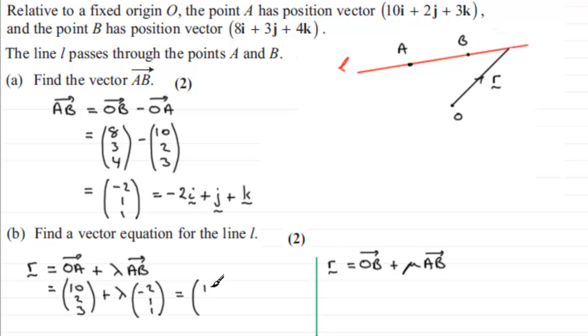or you could even just group the components together and this is very useful in questions to write it as 10 minus 2 lambda and then 2 plus lambda and then finally 3 plus lambda. OK grouping up those components there leave it up to you.